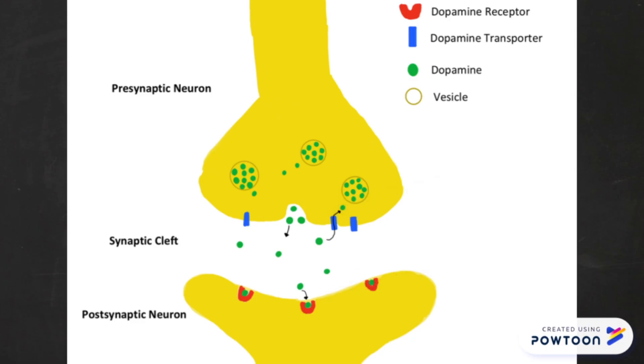Normally, excess dopamine would be reabsorbed back into the presynaptic neuron by a dopamine transporter. However, when cocaine is present, it binds to the dopamine transporters, preventing dopamine from being recycled back into the presynaptic neuron. Therefore, dopamine continues to bind to the receptors, stimulating a response.